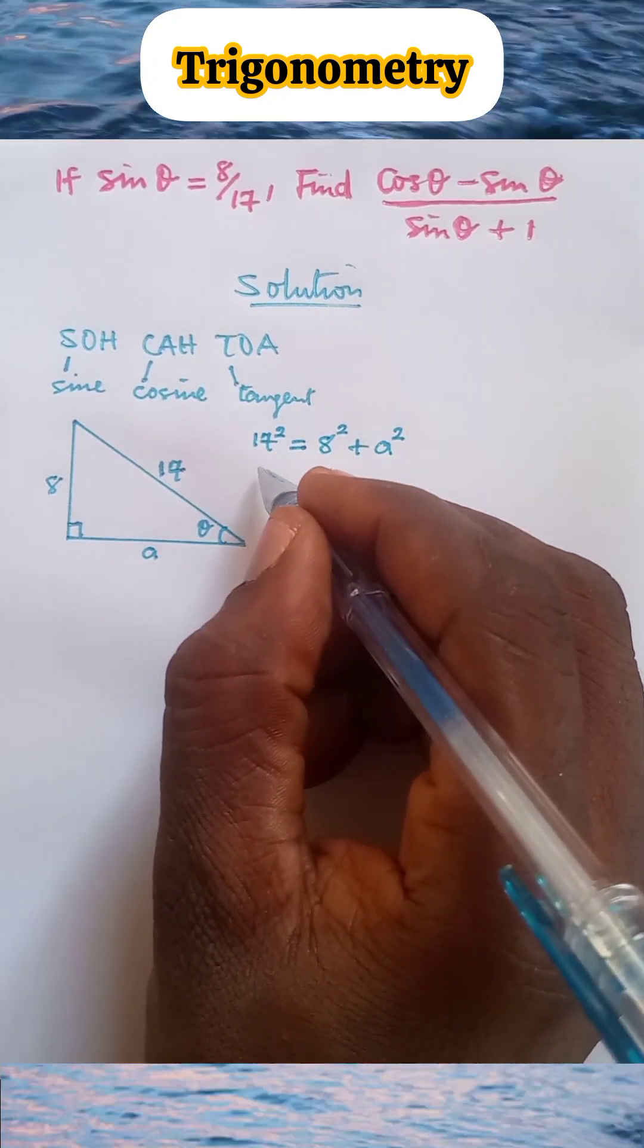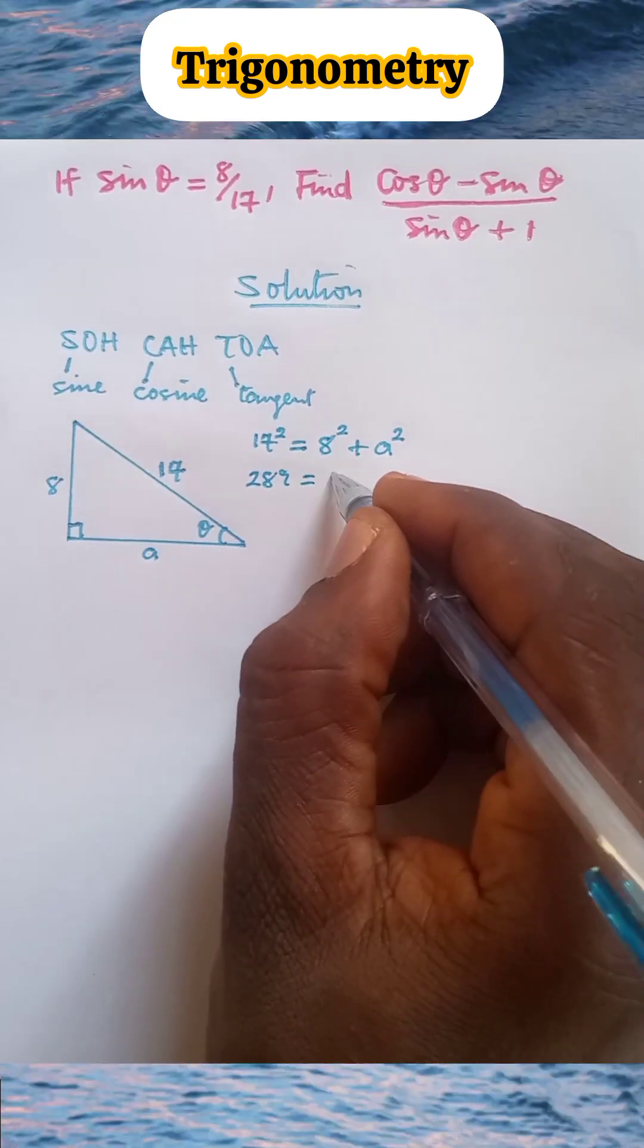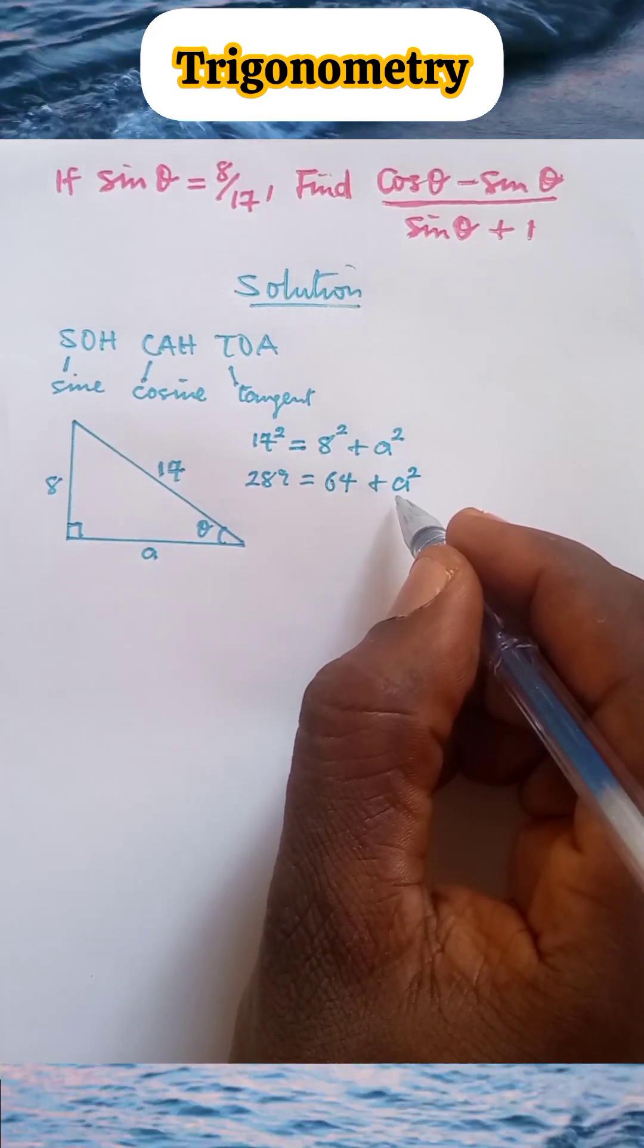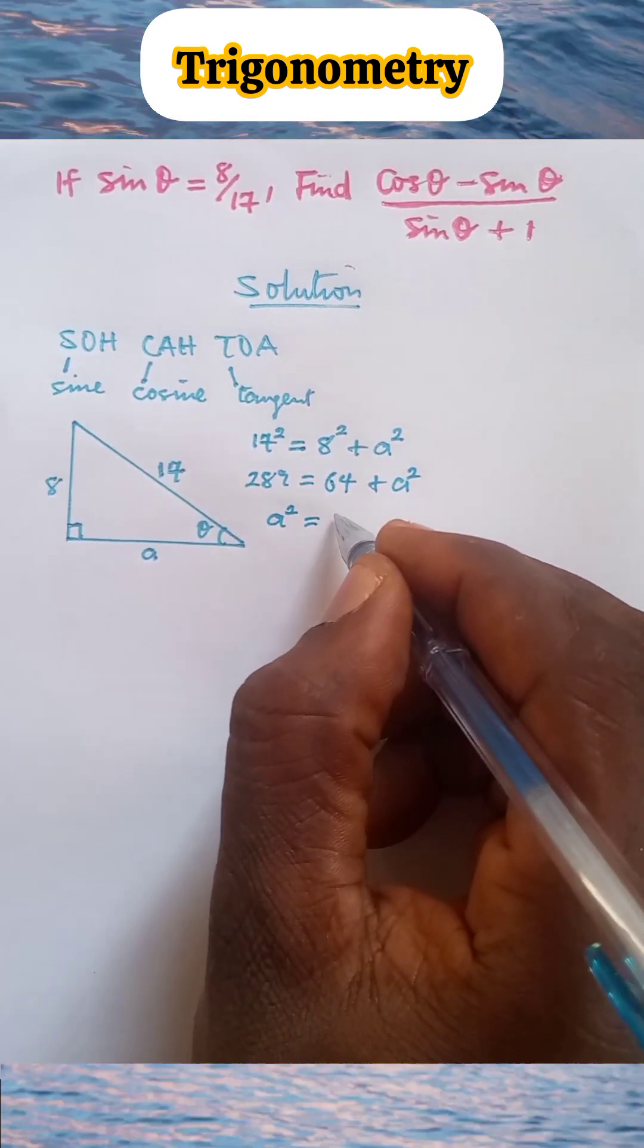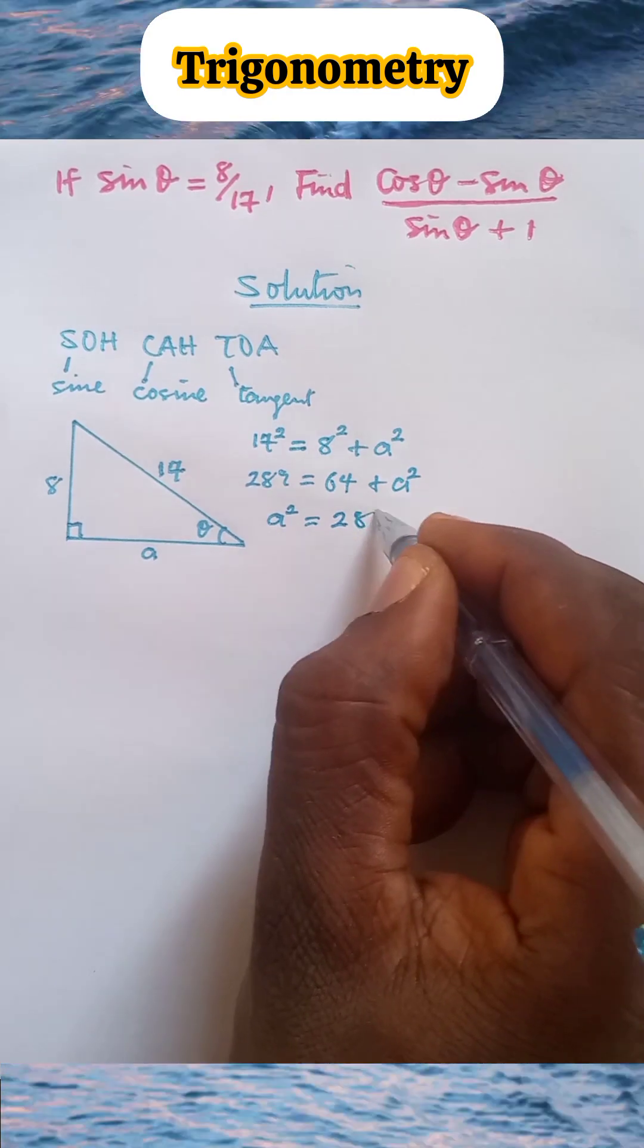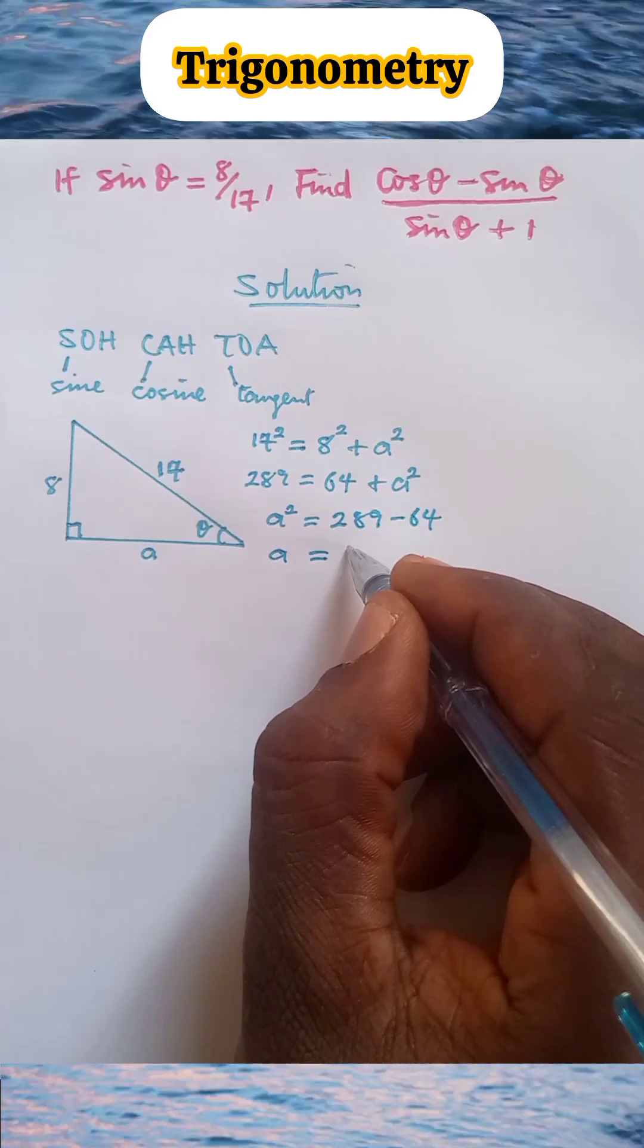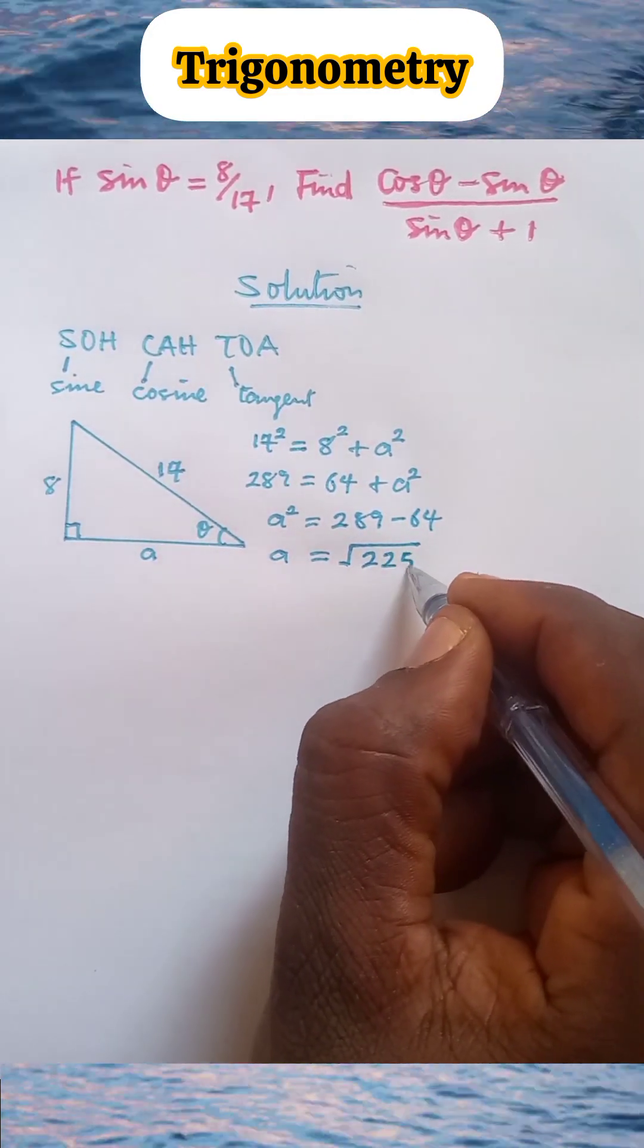And 17² = 289. Here is 64 + A². If we make A² subject of the formula, we have that A² = 289 - 64. And when we remove the exponent from A, we have that A = √(289 - 64) = √225.